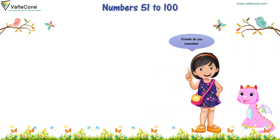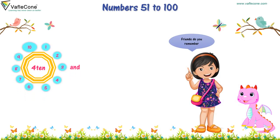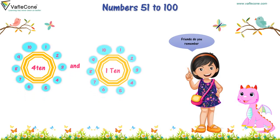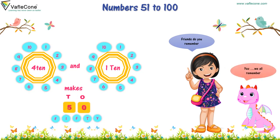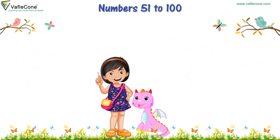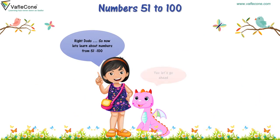Do you remember? 4 tens and 1 ten makes 5 tens, which is 50. Yes, we all remember. Right, Toto. So now let's learn about numbers from 51 to 100. Yes, let's go ahead.